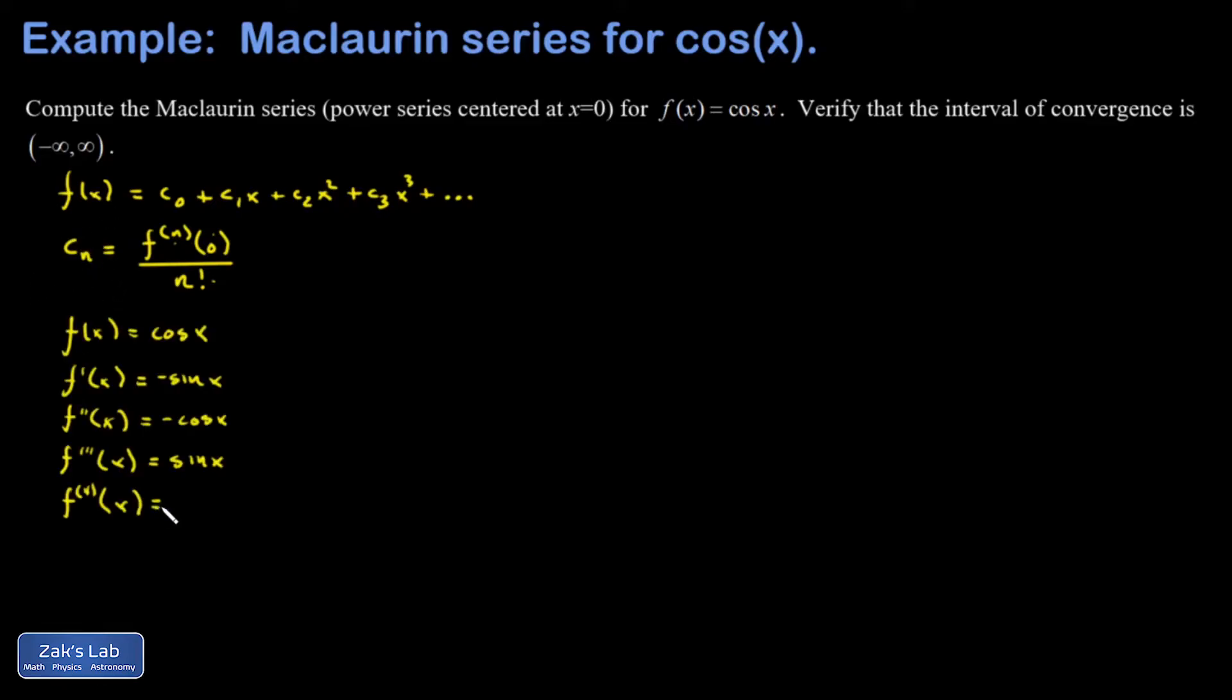All right, I've got my first few derivatives done. This is straightforward: the derivative of sine is cosine, derivative of cosine is negative sine. I'm on the fourth derivative now; I'm going to go all the way to six so I can be really sure to see the pattern.